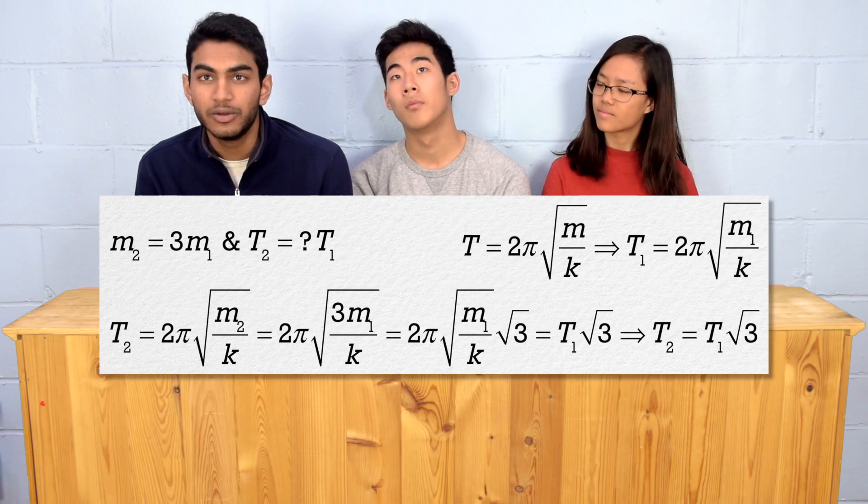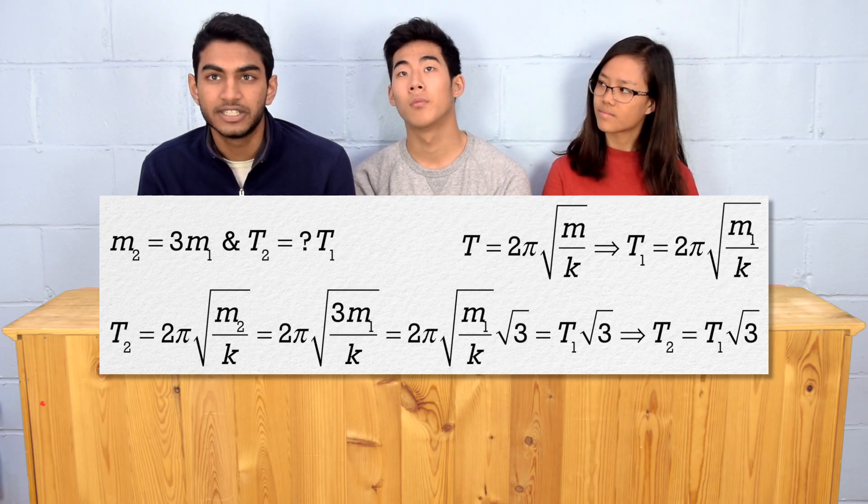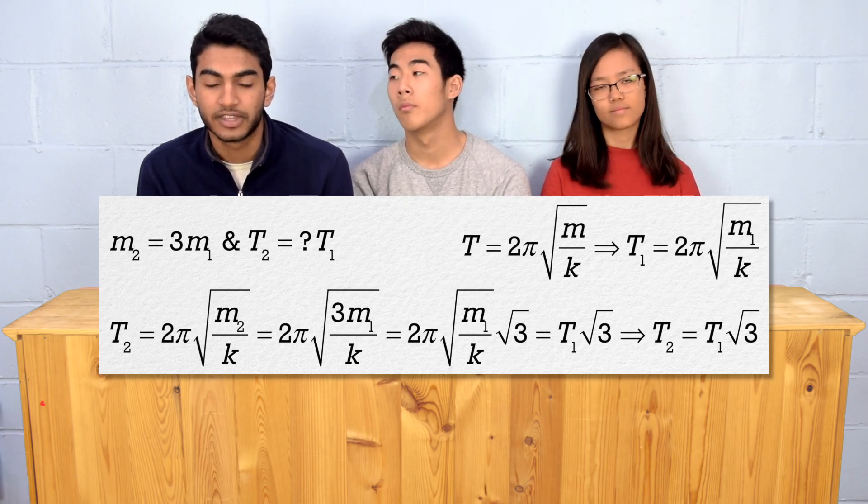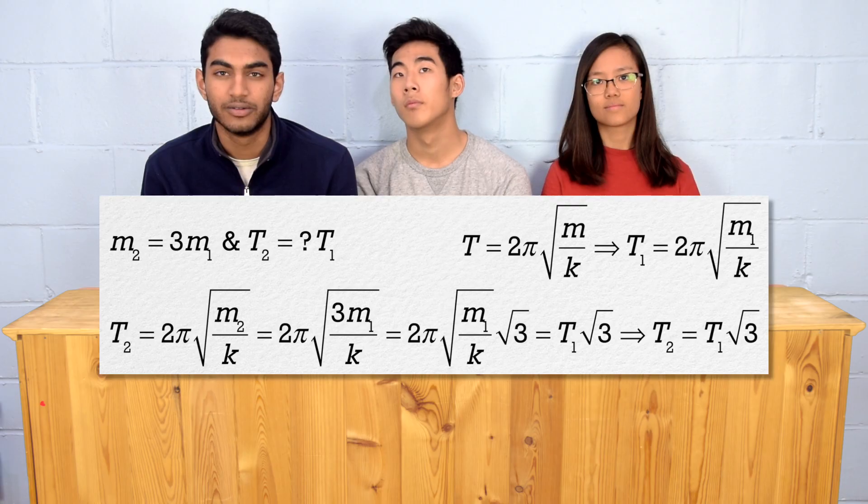If we do a three-fold increase in the mass, the period increases by the square root of 3. That's pretty cool.